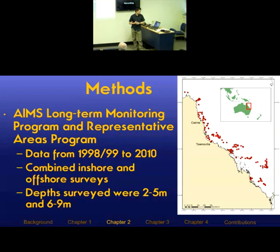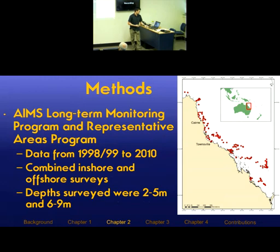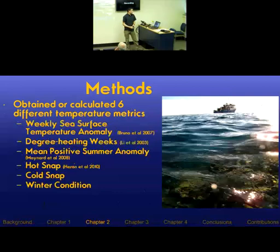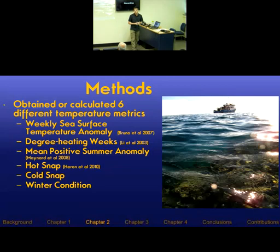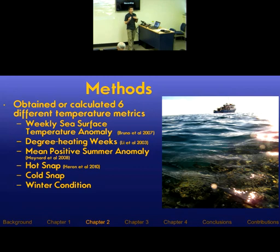For this study I looked at the AIMS long-term monitoring program combined with the Representative Areas Program. The LTMP looks primarily at offshore areas; the RAP looks primarily at inshore areas. The data extended from 1998 — more accurately 1999 when they fully started collecting data — to 2010, with depths surveyed of either two to five meters or six to nine meters. I obtained or calculated six different temperature metrics commonly used to predict bleaching, including weekly sea surface temperature anomaly, degree heating weeks, the mean positive summer anomaly, hot snap, cold snap, and winter condition.